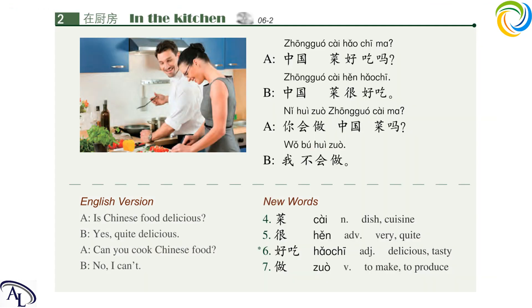课文2 Text 2. 中国菜好吃吗？中国菜很好吃。你会做中国菜吗？我不会做。New words: 菜 很 好吃 做